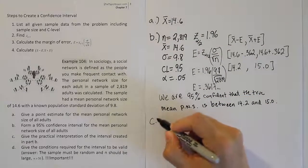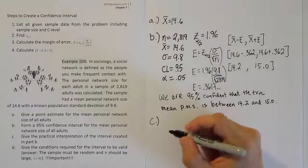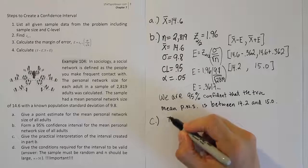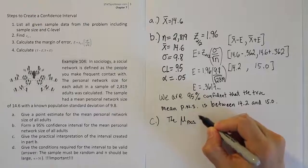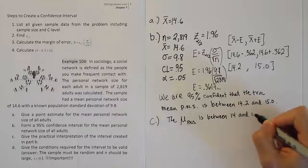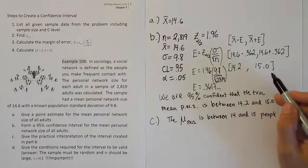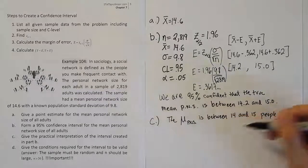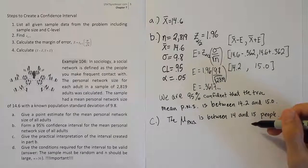Part C is the part where we want to give the practical interpretation. Somewhere between 14 and 15 people are in the average person's personal network. The mean personal network size is between 14 and 15 people. I'm being a little loose here because it's actually between 14.2 and 15, but just rounding it down, we say 14 to 15 because this is just a practical interpretation. The average person has about 14 or 15 people that they keep in contact with on a regular basis.